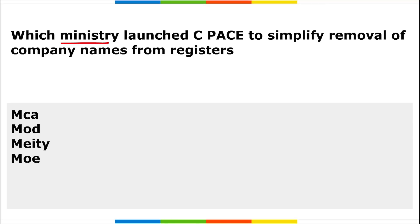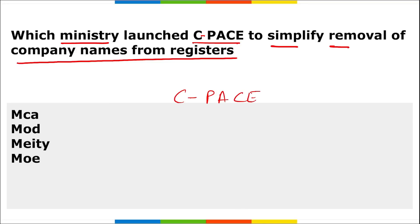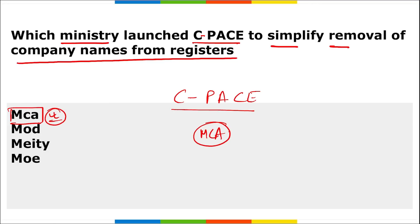Which ministry launched CPACE to simplify removal of company names from registers? CPACE stands for Center for Processing Accelerated Corporate Exit. This was to centralize the process of striking off companies from the MCA — Ministry of Corporate Affairs — register. It was the Ministry of Corporate Affairs that launched CPACE to simplify the removal of various company names from the register.